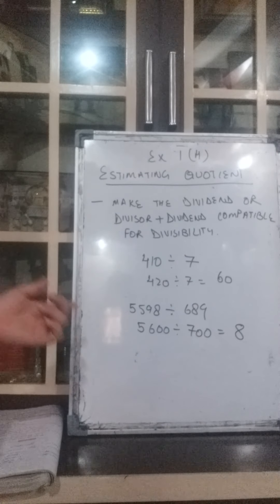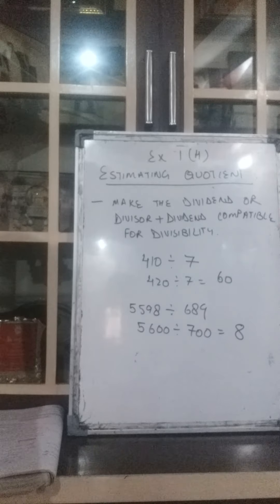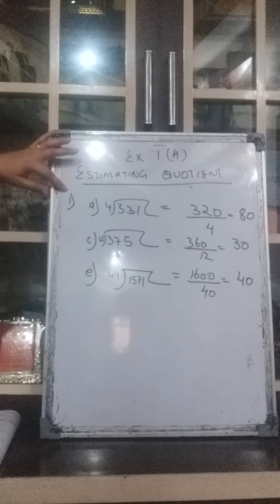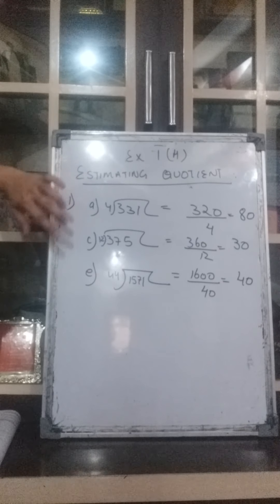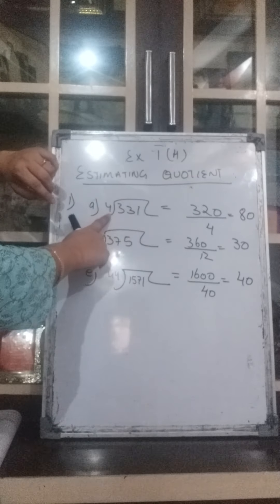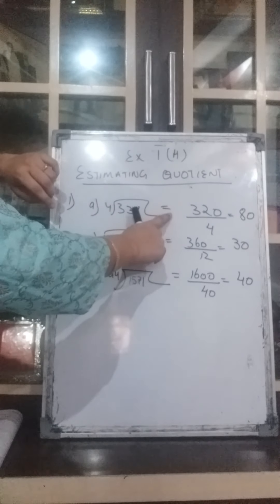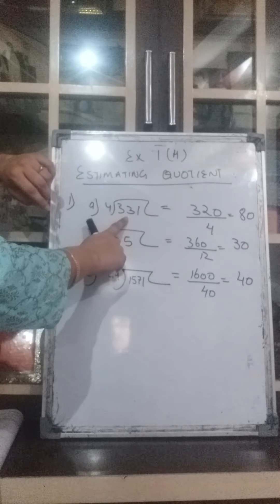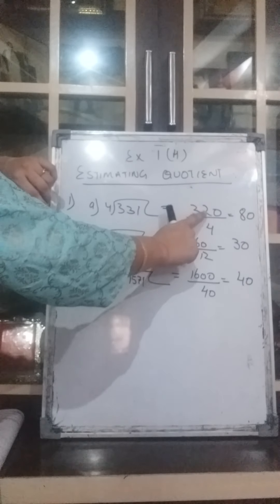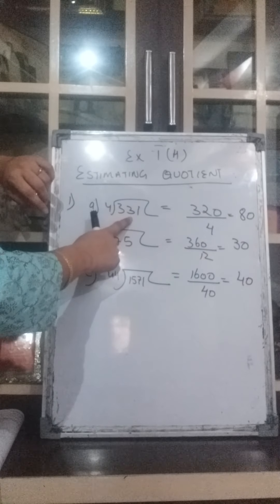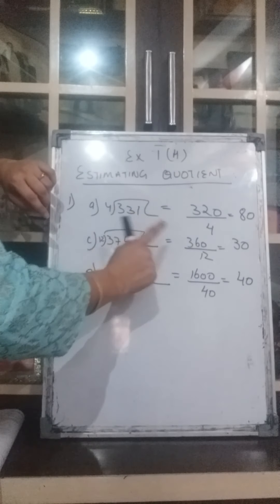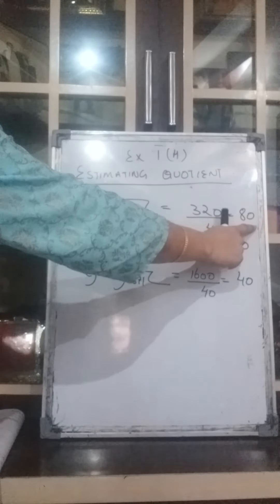We will do the exercise and then it will be more clear. Now we come to the first question — A part, C part, and E part. A part is given: 331 divided by 4. Here they have already estimated the dividend to 320, because 320 is closer to 331 and can be easily divided by 4. So the answer will be 80.